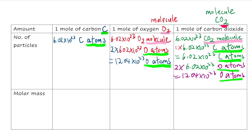What is molar mass? It is basically the relative atomic mass of all of the atoms combined. If you're a Form 4 student, the relative atomic mass is essentially the mass number from the periodic table — the number of protons plus the number of neutrons.